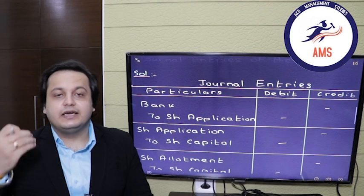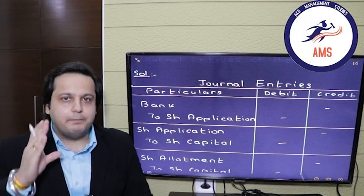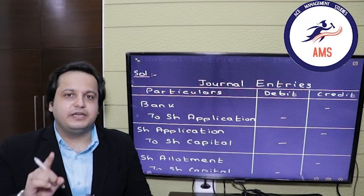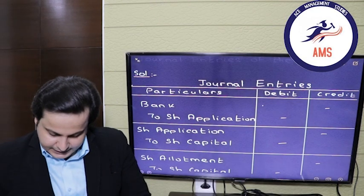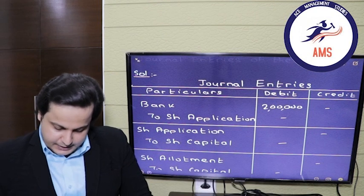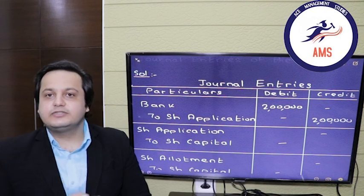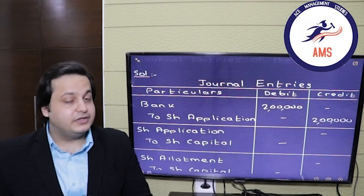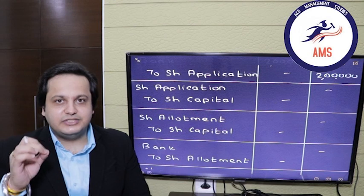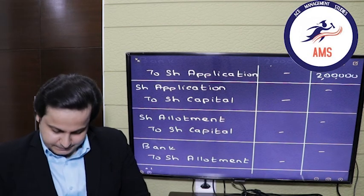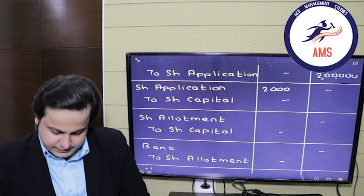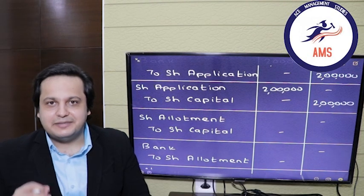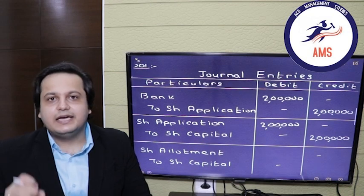Firstly, we will pass the entry for receiving the applications. The entry will be: bank account debit to share application. The amount will be 1 lakh shares multiplied by the application money of 2 rupees, so 2 lakhs. Since there is no pro rata allotment, we will fully capitalize these applications. The entry will be: share application account debit to share capital — 2 lakh rupees each side. The balance of the share application account comes out to zero.